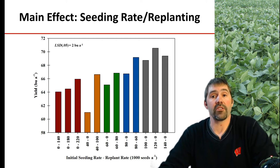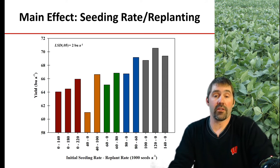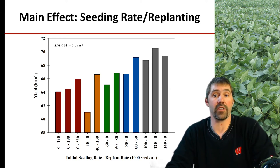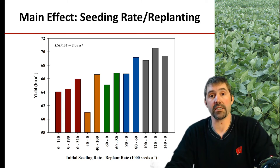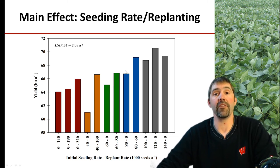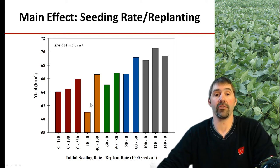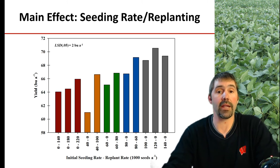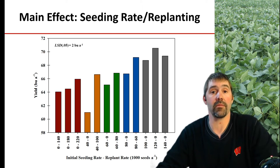When you go out to make these assessments, what I always encourage growers and crop consultants to do is: as long as you have 50,000 plants per acre at that VC growth stage, do not touch that soybean field at all. Do not go in and retill it to start a new stand, or try to inter-seed across that existing stand with new seed. Data here is pretty conclusive saying as long as we have 60,000 plants or more, it really does not benefit us to add more seed into that existing stand. However, once we get below 40,000, this data clearly shows that growers can effectively inter-seed and still economically maximize yield.